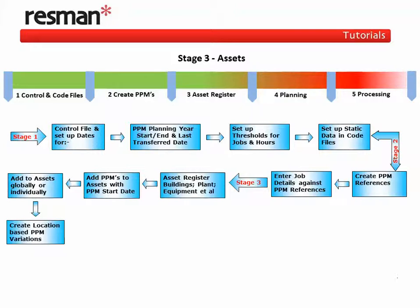Once we've added a PPM reference and start date, it leads us into Stage 4, the planning stage. However, it's worth mentioning that if we need to alter any aspect of a PPM job based on a geographical location — for example a different estimated time or work detail — we can also create a PPM variation of an existing PPM job with a simple two-stage wizard that guides you through the process.